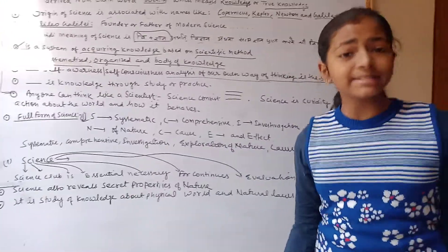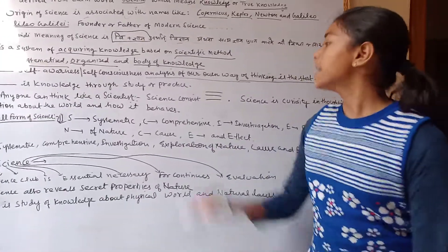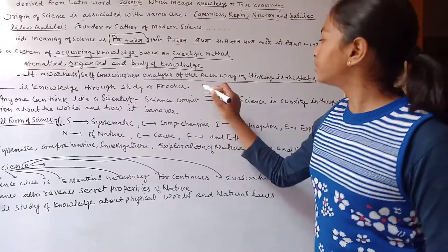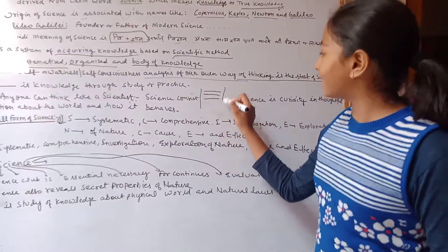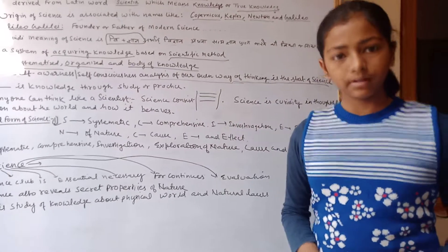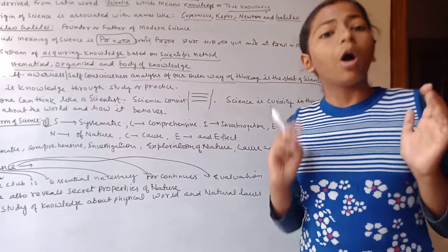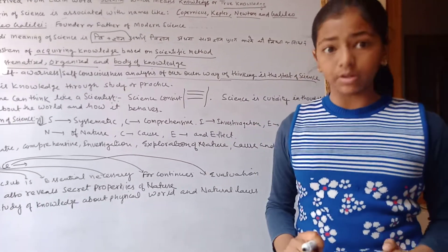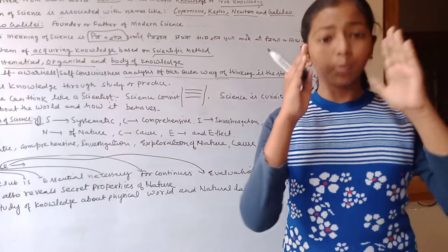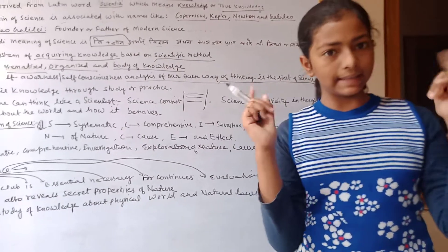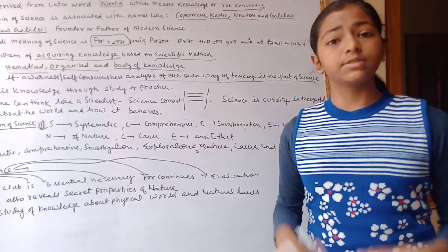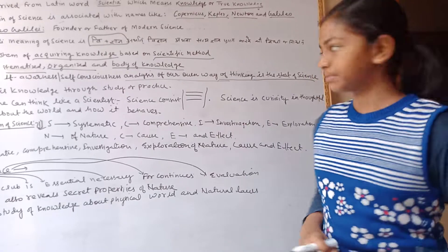Anyone can think like a scientist. Science consists of three parts: first, observing the world; second, watching and listening; third, observing and recording.